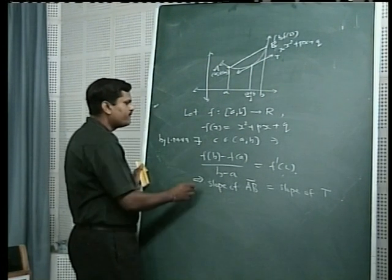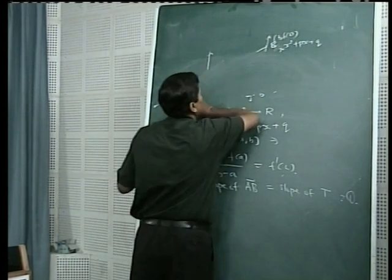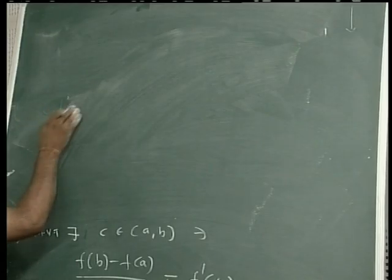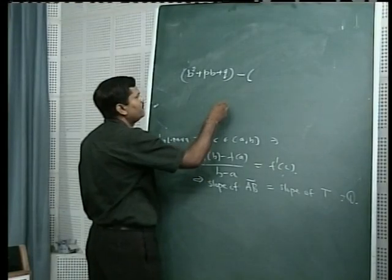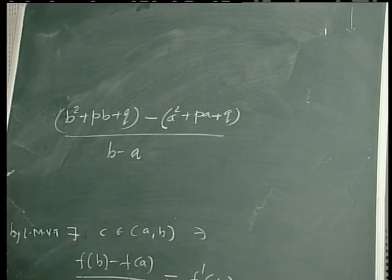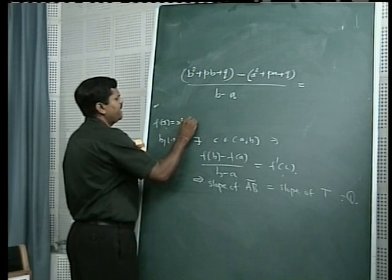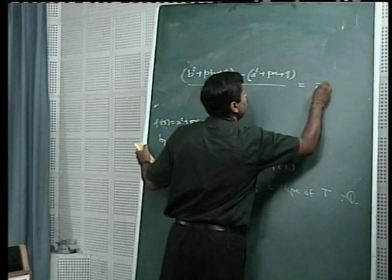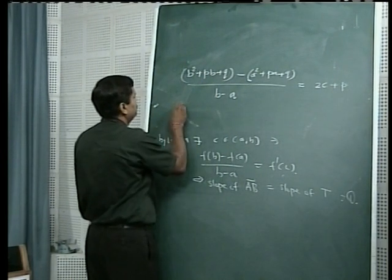Now, f(b) is obtained by putting x = b in the equation, giving b² + pb + q. Minus f(a) gives a² + pa + q, upon b minus a, equals f'(c). Since the function is f(x) = x² + px + q, the derivative is f'(x) = 2x + p, and the derivative at point c is f'(c) = 2c + p.